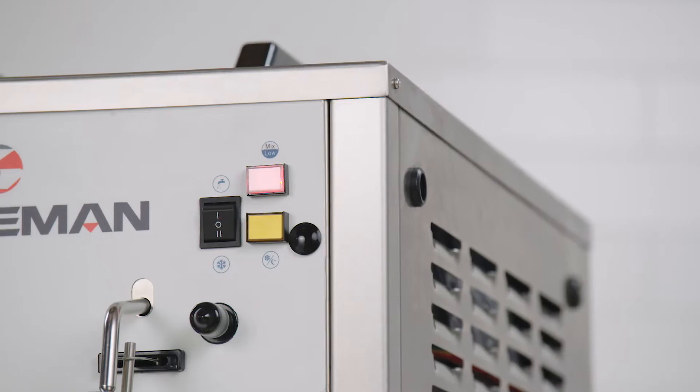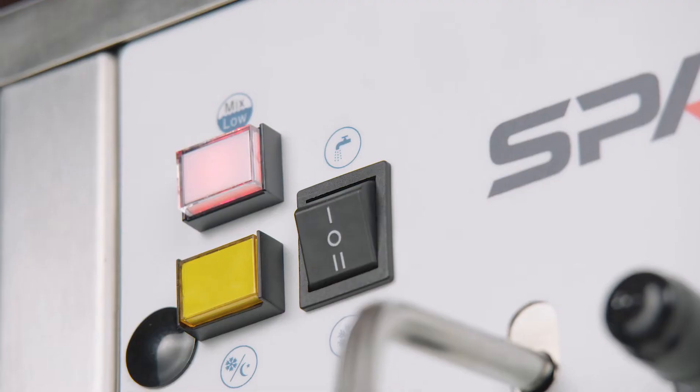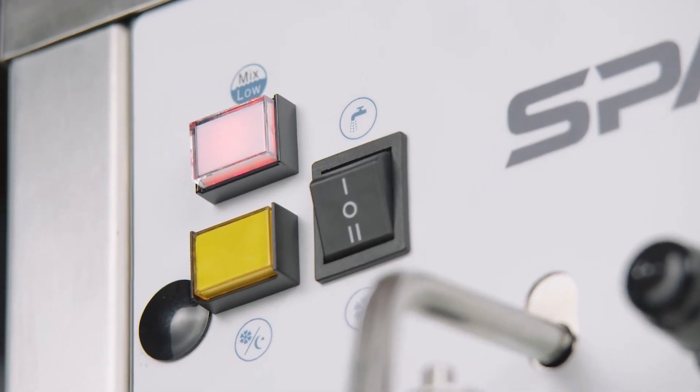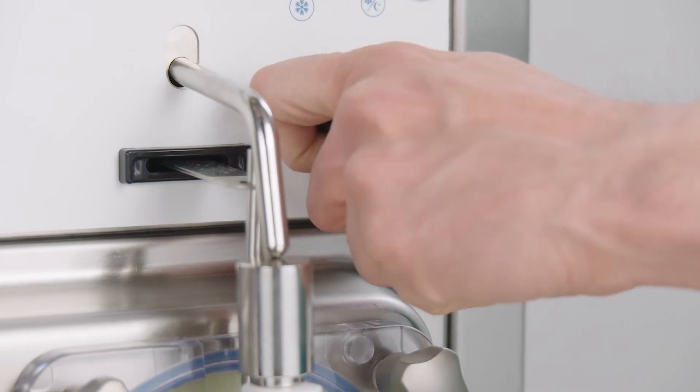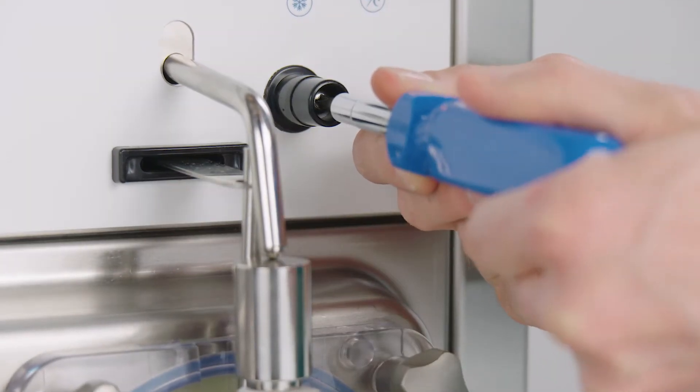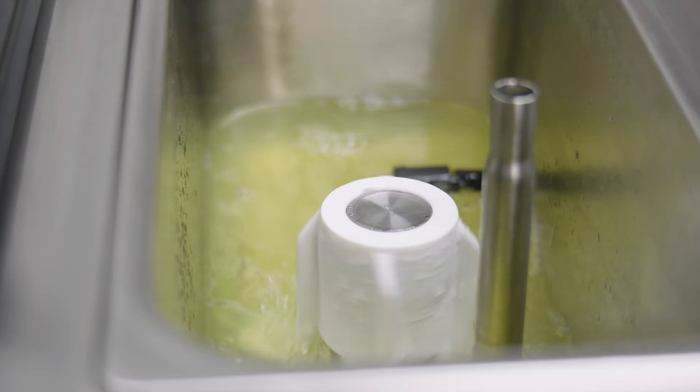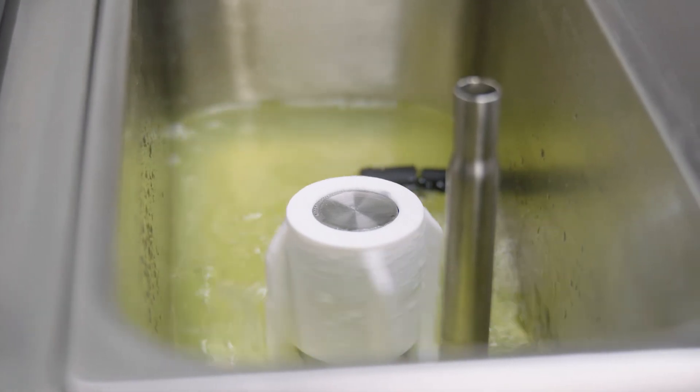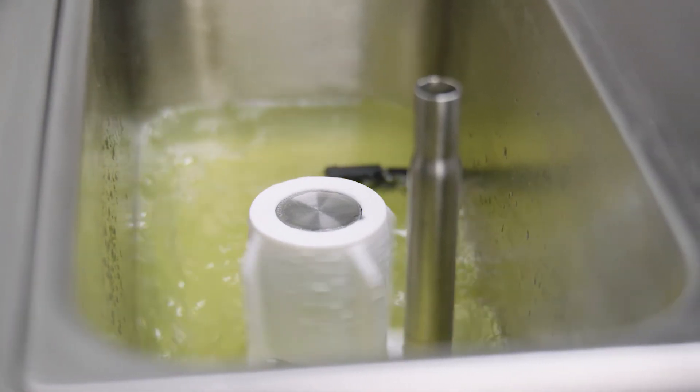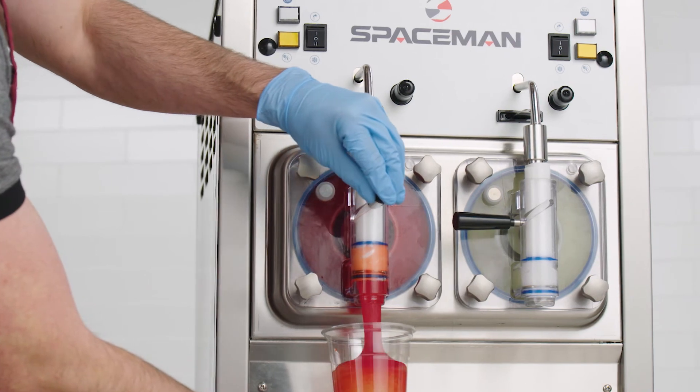For minimum staff stress and effort, a convenient indicator light and alarm show when to add mix. A fully adjustable viscosity control allows you to set the desired consistency of your product. A hopper agitator ensures consistent cooling, increased temperature control, and great quality every time.